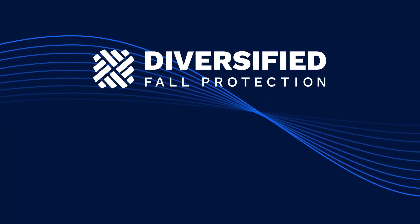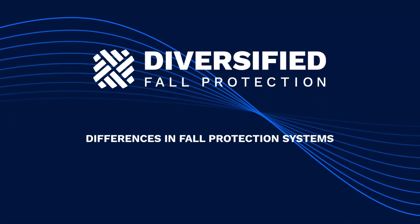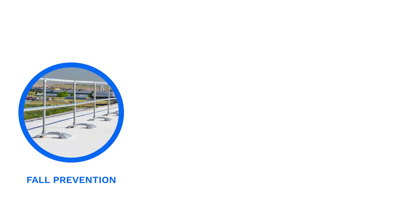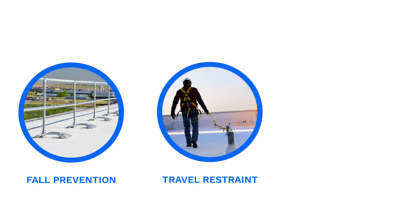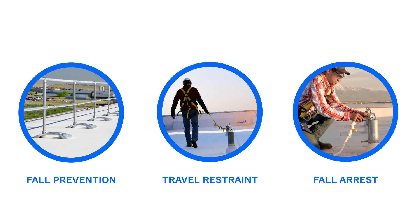We often are asked the question: what's the difference between fall prevention, travel restraint, and fall arrest systems? The terms kind of sound the same, don't they? Each of these terms has a different meaning, so it's important to familiarize yourself with them. These different systems protect workers from fall hazards in different ways. Fall prevention systems prevent a fall from happening, travel restraint systems keep users from being able to reach the edge, and fall arrest systems are designed to stop a fall that has already begun. Understanding the difference between these systems means you can choose the best solution for your roof.